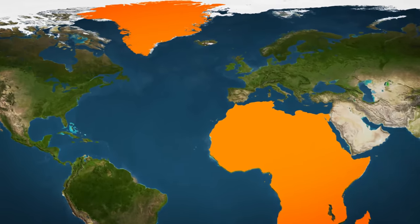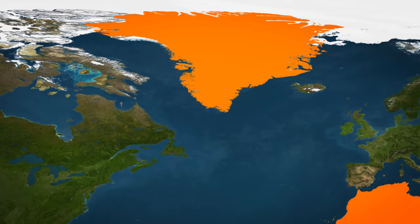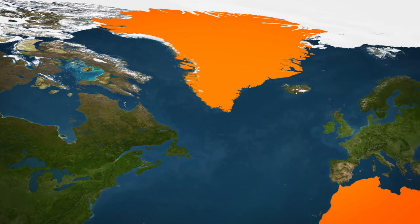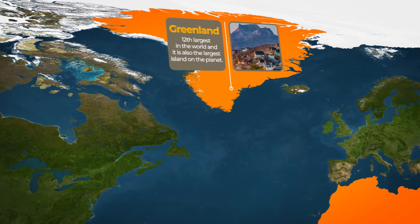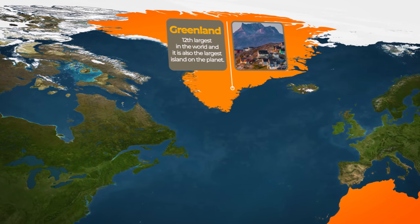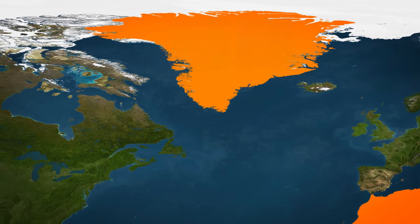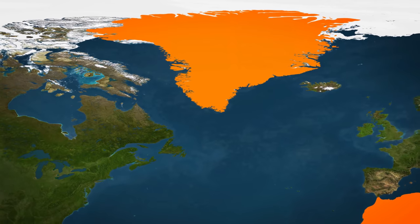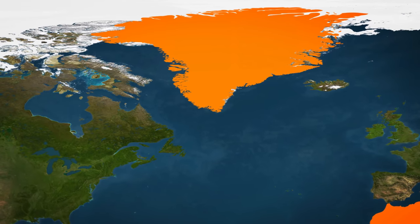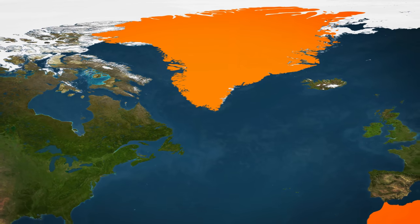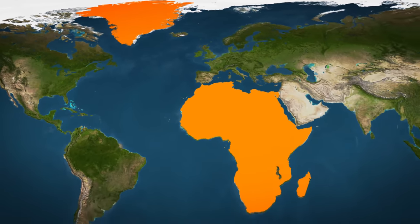Greenland is certainly impressively large. If it were its own country, it would be the 12th largest in the world and it is also the largest island on the planet. However, its position near the North Pole has dramatically exaggerated its proportion, since it is not, in fact, larger than Africa — not even close.